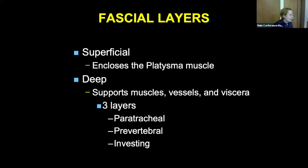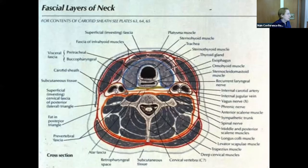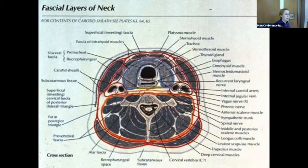When you look at the fascial layers, there's a series of layers that enclose all the structures. There's a superficial layer enclosing the platysma muscle, and then three deeper supporting layers: the paratracheal, prevertebral, and visceral. When you see how they wrap around and intertwine, you understand why blood or air dissecting through initially isn't seen — it's tamponaded — and then there's major distortion. There's also a setup for infection, especially from esophageal injuries.